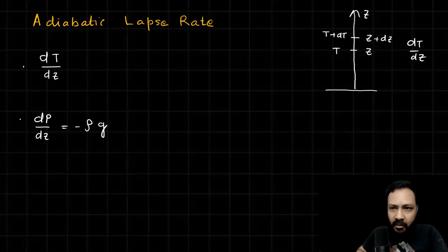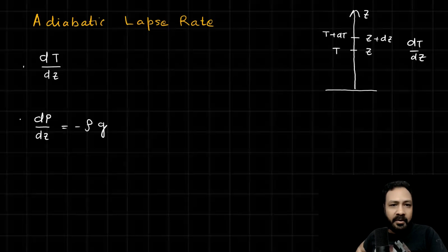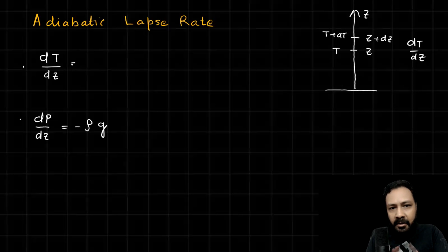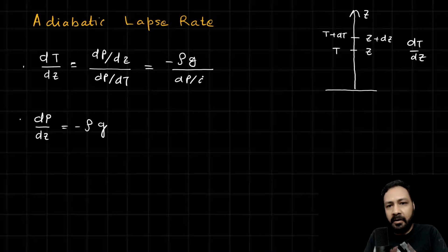Using dp/dz = -ρg, I want to arrive at the expression for dT/dz. What I would like to do is write dT/dz as (dp/dz) divided by (dp/dT). If I can get this, I will get the answer. For dp/dz I'll put the value -ρg, and I have to find dp/dT.